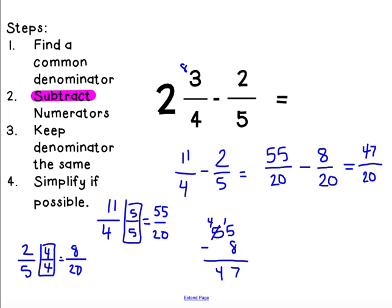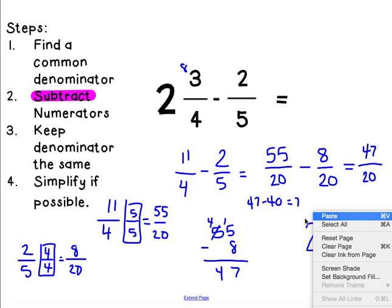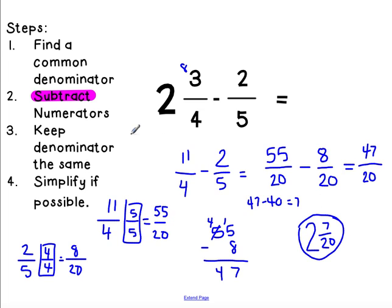And then I can go ahead and turn this back into a mixed number because I do not want an improper fraction as my final answer. So 20 goes into 47 two whole times. I can subtract. I need to do two groups of 20, which would be 40. So I have 47 minus 40 because I need to take away those two wholes, and I get 7. So I get 2 and 7 twentieths, and I can't simplify any further. So that is my final answer.